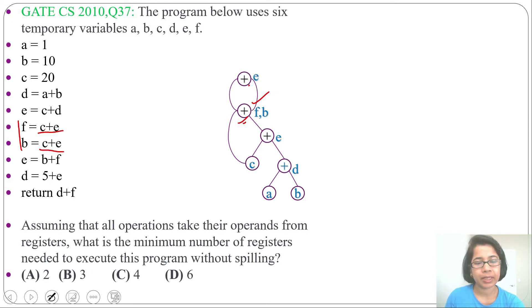Next 5 plus E equal to D. E is already there, we will create another node 5. And for plus 5 will be its left child, E will be its right child. And this node will be labeled as D. Next return D plus F, this D and this F. So we will create another node. Its left child will be D, right child will be F. If you are confused for constructing DAG, you can write in single static assignment form, then you can create the DAG.